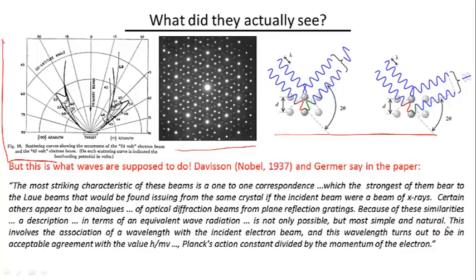And finally they say their data made sense if it involves association of a wavelength with the incident electron beam, and this wavelength turns out to be in acceptable agreement with the value of h over mv, h being the Planck's action constant divided by the momentum of the electron.